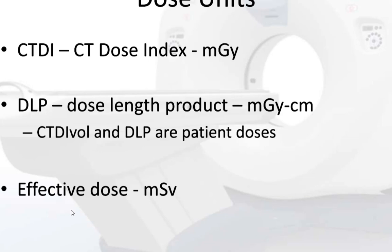There are two fundamental dose units. CTDI is the CT dose index, measured in milligray. DLP is the dose length product, in milligray-centimeters. There is also effective dose, and the units for that are millisieverts.